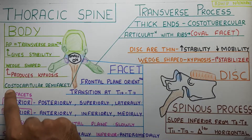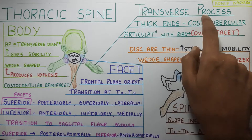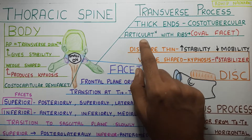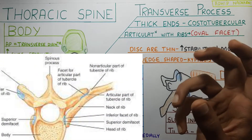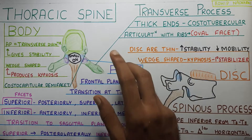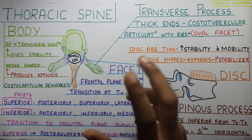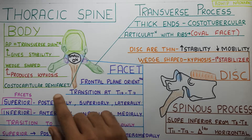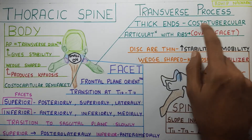Apart from this, there is also the costo-capitular demifacet which articulates with your ribs. Then going to the transverse process — the transverse process is very thick and it ends with a costo-tubercular articulation. Costo refers to the ribs, and tubercle refers to the tubercle of the ribs. So the thick end of the transverse process articulates with the tubercle of the ribs, and this articulation is oval in shape. The body has costo-capitular demifacets — which are half facets — and the transverse process has the costo-tubercular articulation.